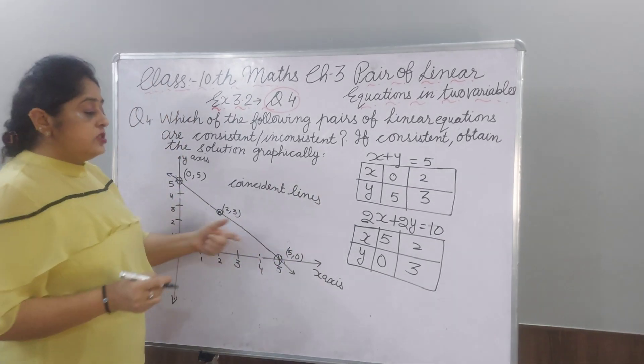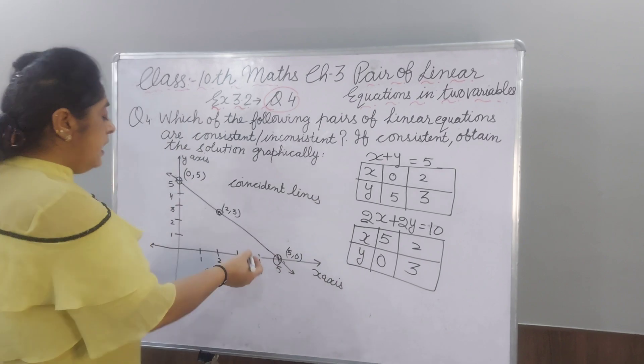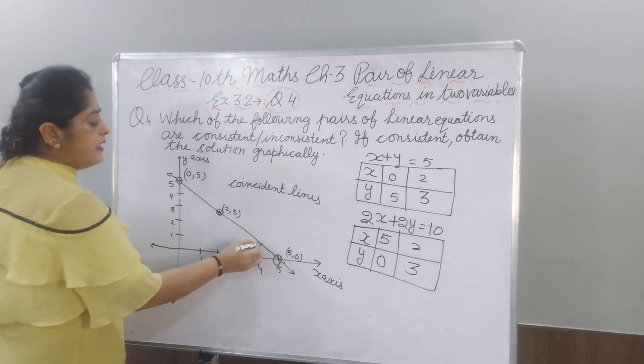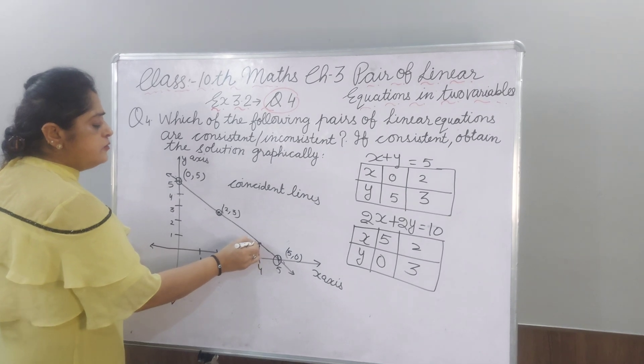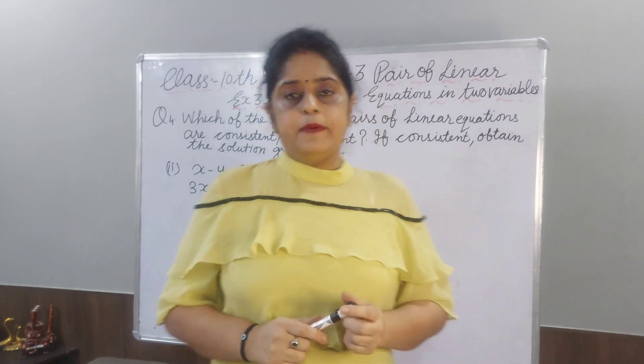They have many solutions. Here you have written by X2, Y3. If X is 4, you will get Y as 2. So many solutions you will get from this graph. Now, second part.